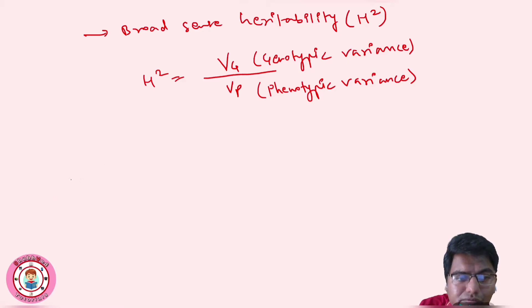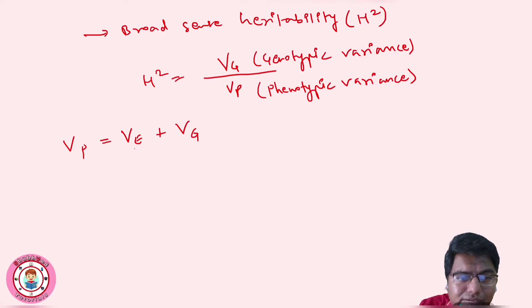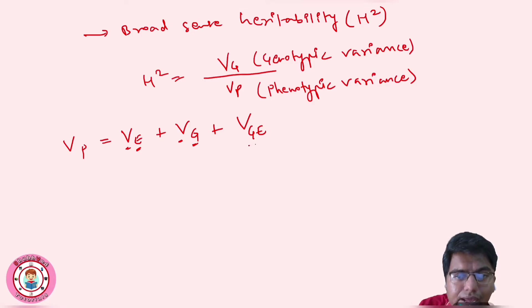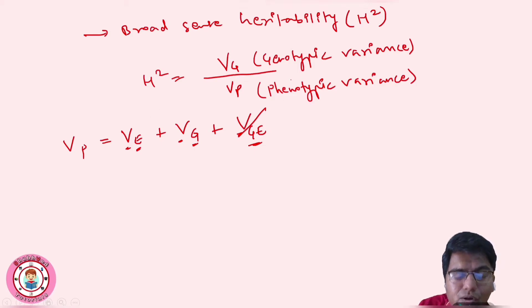Vp, that is phenotypic variance, is due to environmental factors plus genotypic factors. So Vp equals environmental variance (Ve) plus genotypic variance (Vg), plus the interaction between genotype and environment. However, this interaction is negligible, so Vp is essentially Ve plus Vg.